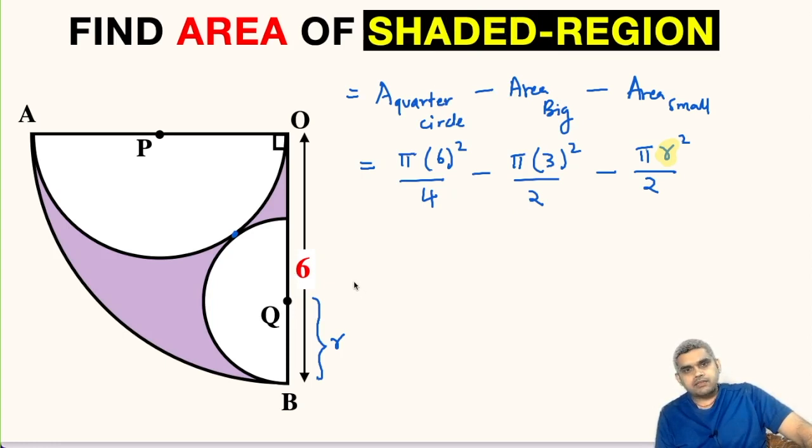For that, let us do one modification. We will join point P and Q. This PQ line segment will pass through this common point, which is the point of contact between these two semicircles. Let us name this point as M.